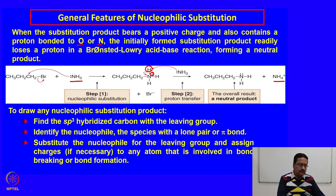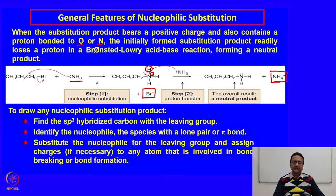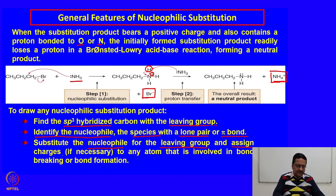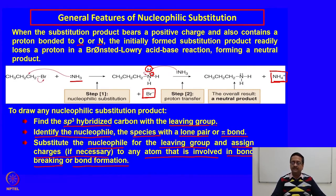When the substitution product bears a positive charge and contains a proton bonded to oxygen or nitrogen, the initially formed product readily loses a proton in a Brønsted-Lowry acid-base reaction, forming a neutral product. For example, when ammonia is used, the product contains N⁺ and N-H bonds. If additional ammonia is present in solution, it takes up the proton from the positively charged species, forming a neutral organic compound and releasing ammonium ion. To draw any nucleophilic substitution product, identify the sp3 carbon with a good leaving group, identify a suitable nucleophile, substitute the nucleophile for the leaving group, assign appropriate charges, and neutralize if possible by elimination of one proton.